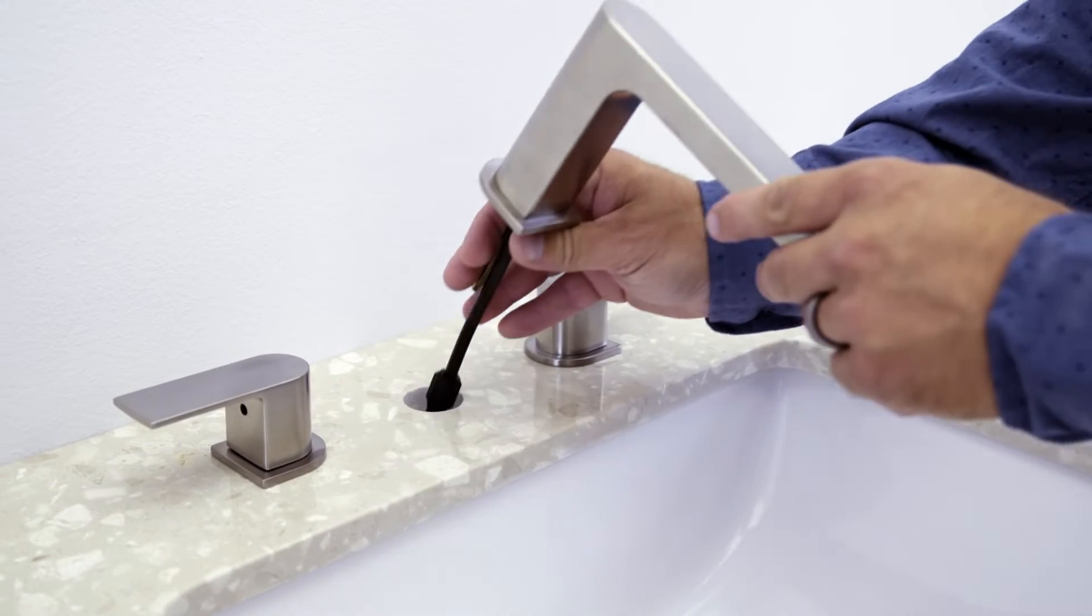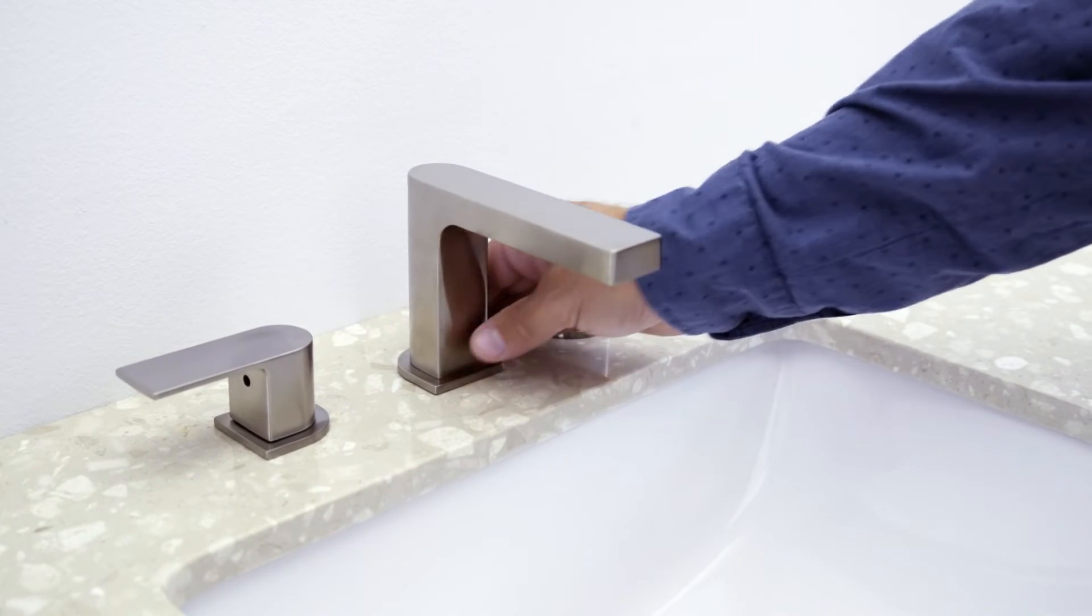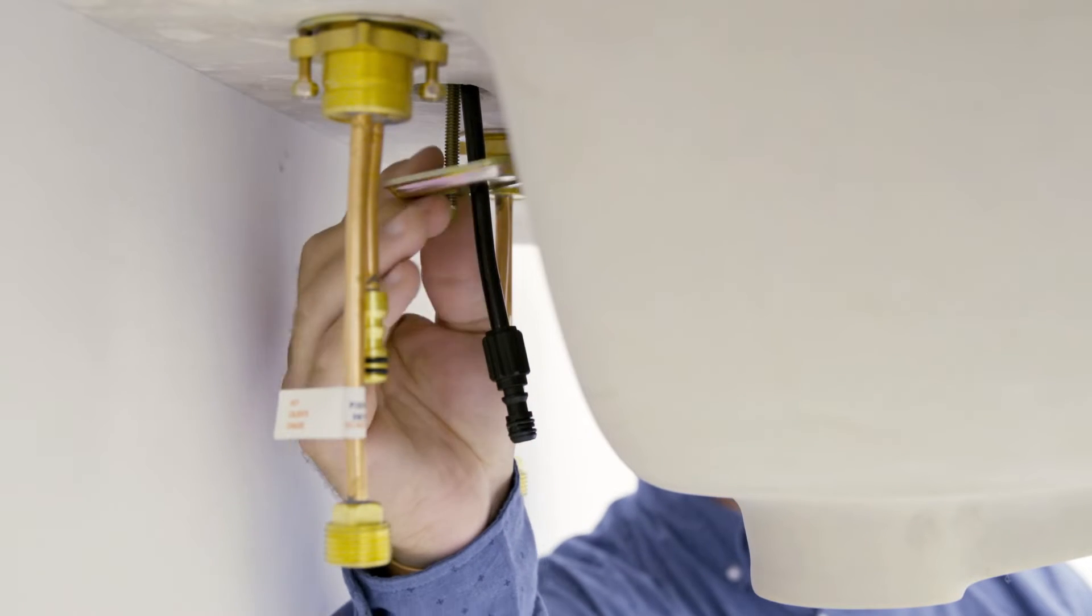Now place the spout through the center mounting hole in the sink. If the deck surface is rough or uneven, use silicone under the spout base. Secure the spout with the bracket and nut.